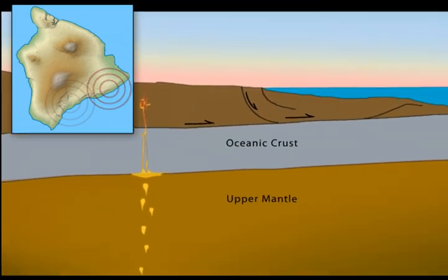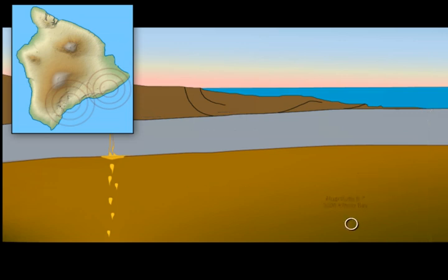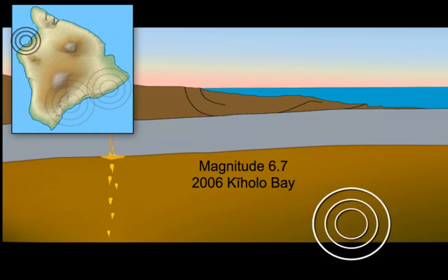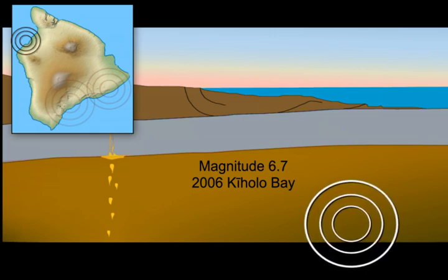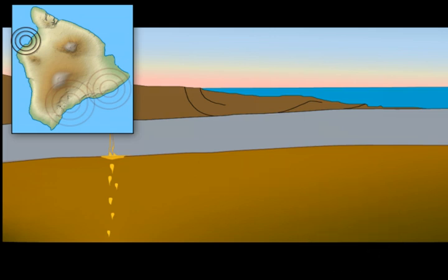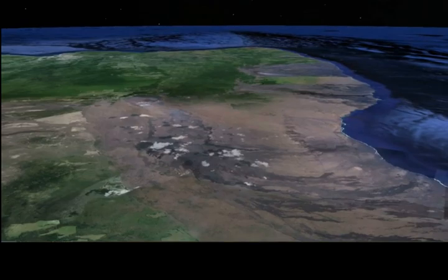The third general source of earthquakes in Hawaii lies deeper in the brittle mantle. Earthquakes there occur as the Pacific plate adjusts to changing loads and temperatures from the large volcanoes above. The magnitude 6.7 Kiholo Bay earthquake in 2006 is an example of a mantle earthquake originating 29 kilometers below the surface. These deep earthquakes occur widely, though infrequently, among the other Hawaiian islands as well.